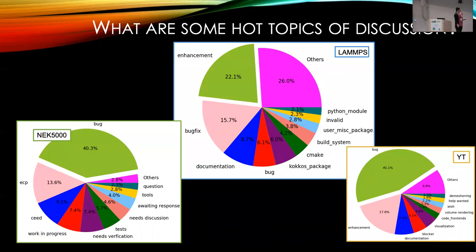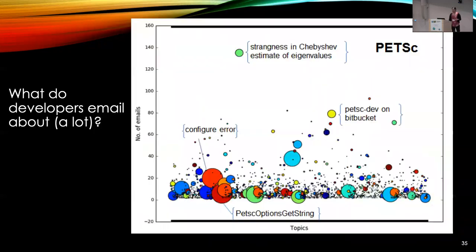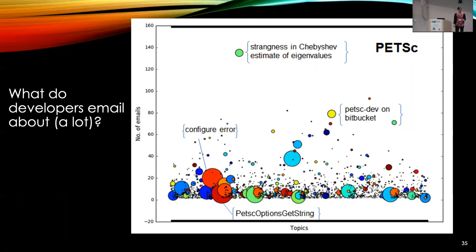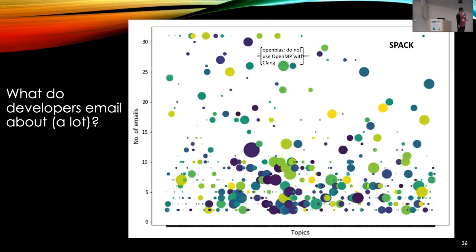These are discussions focusing on natural language processing analysis: what are people talking about? Those are three different scientific projects. Hot topics of discussion — using very standard analysis — are basically bugs, enhancements, bug fixes, documentation, and so on. You can see over time what's driving the conversation. For a PETSc developer mailing list: topics are on the x-axis, number of emails on the y-axis, and the size of the bubble indicates how long the conversation lasted. The big red circles are certain topics — and apparently configure errors are by far the most long-lasting discussion topic. Bubble charts are not that useful, but they're fun to look at.